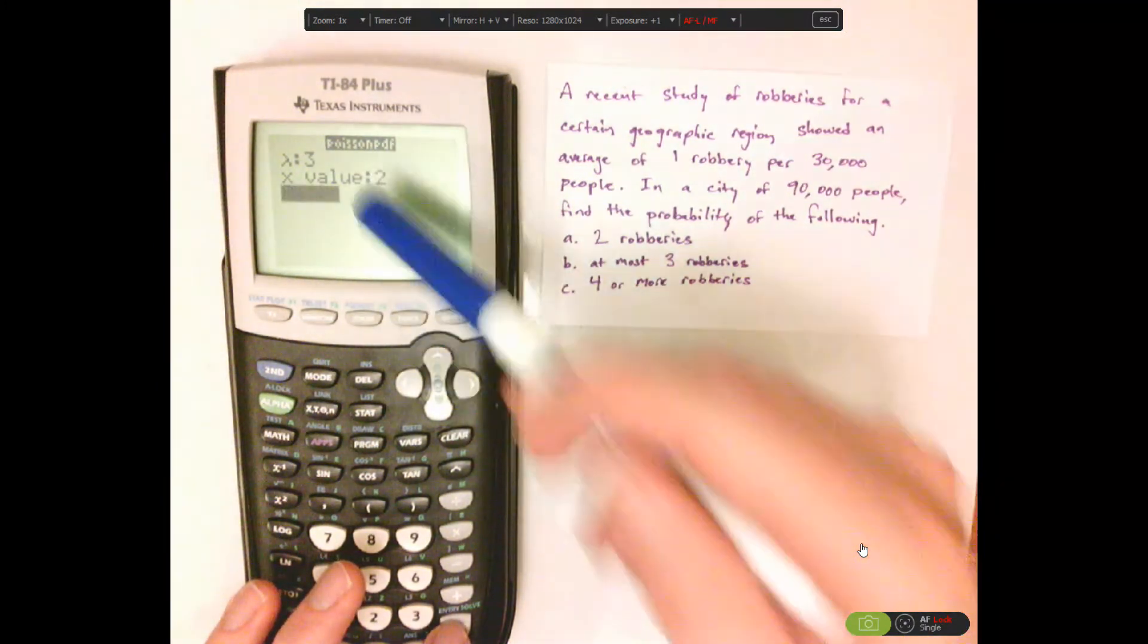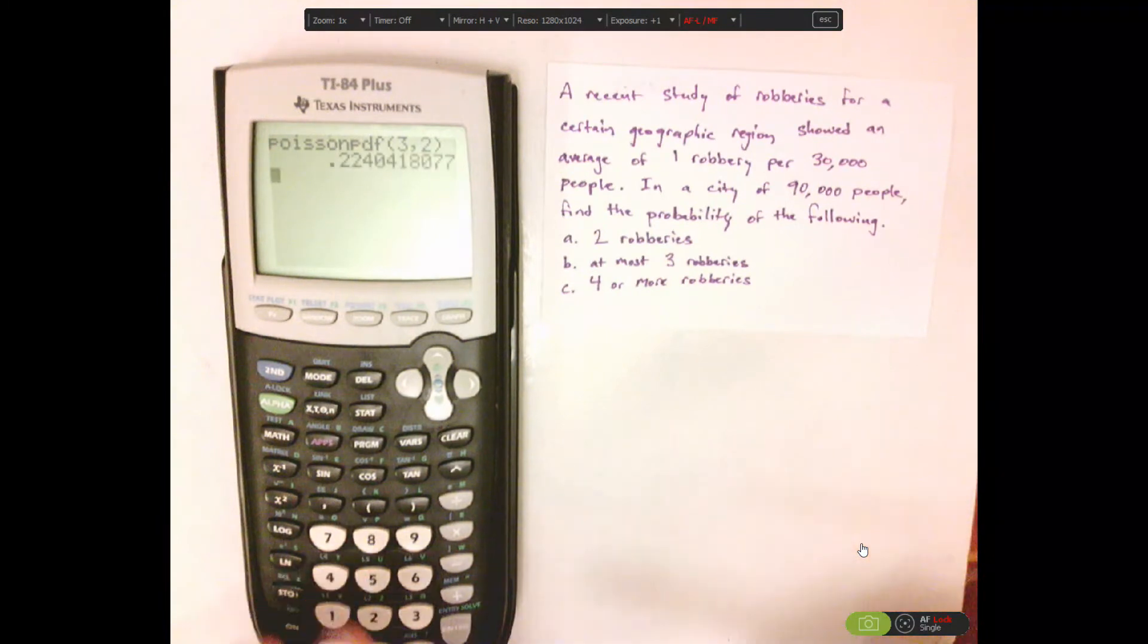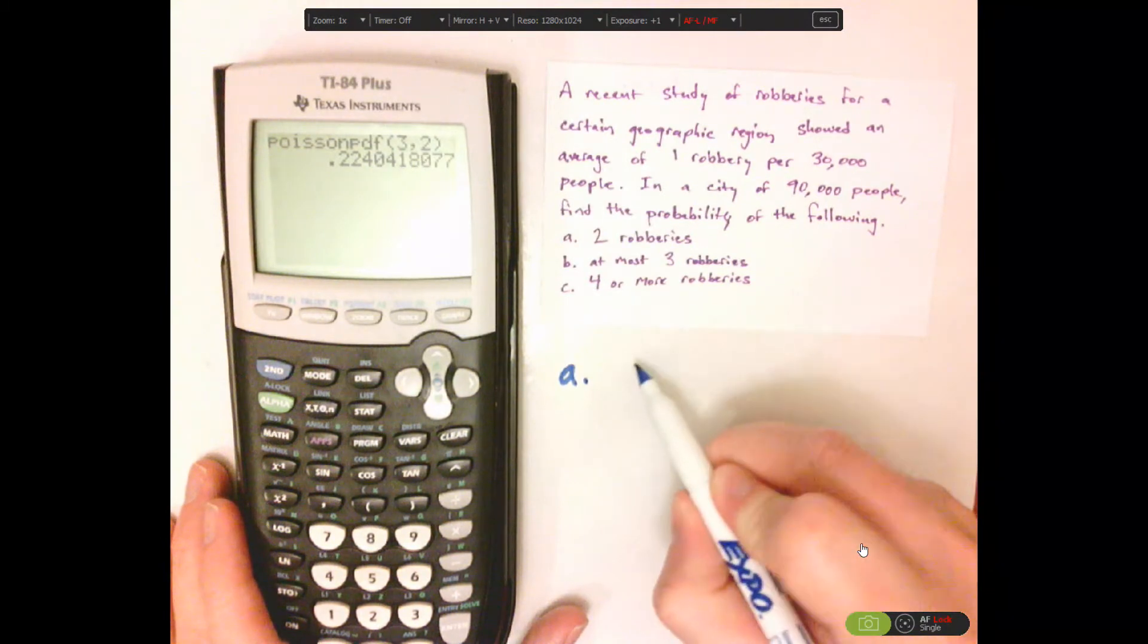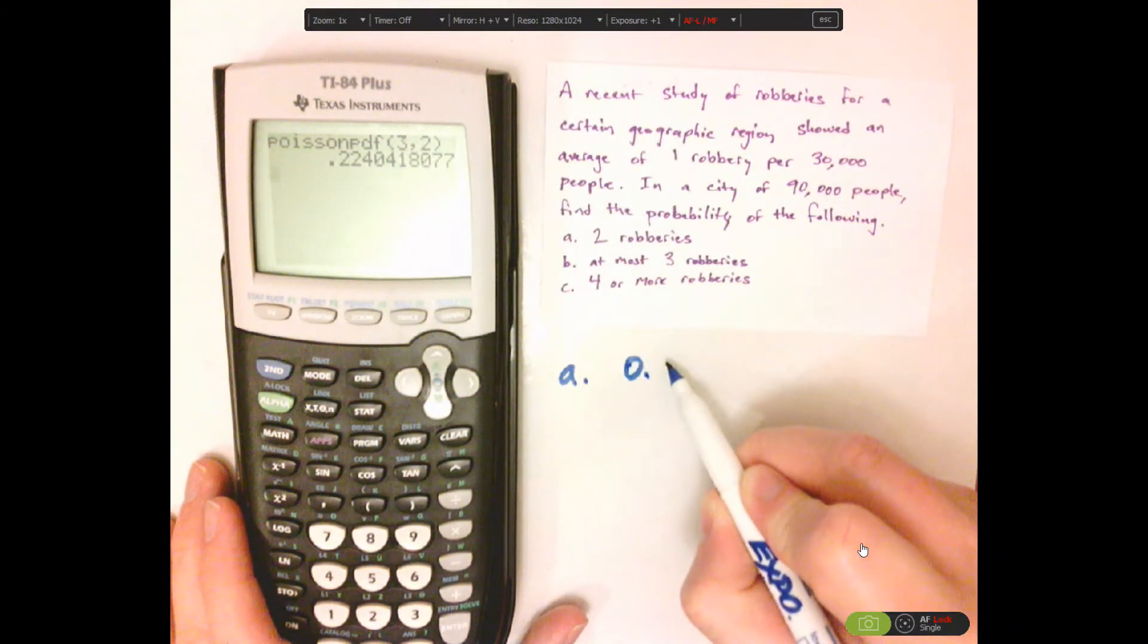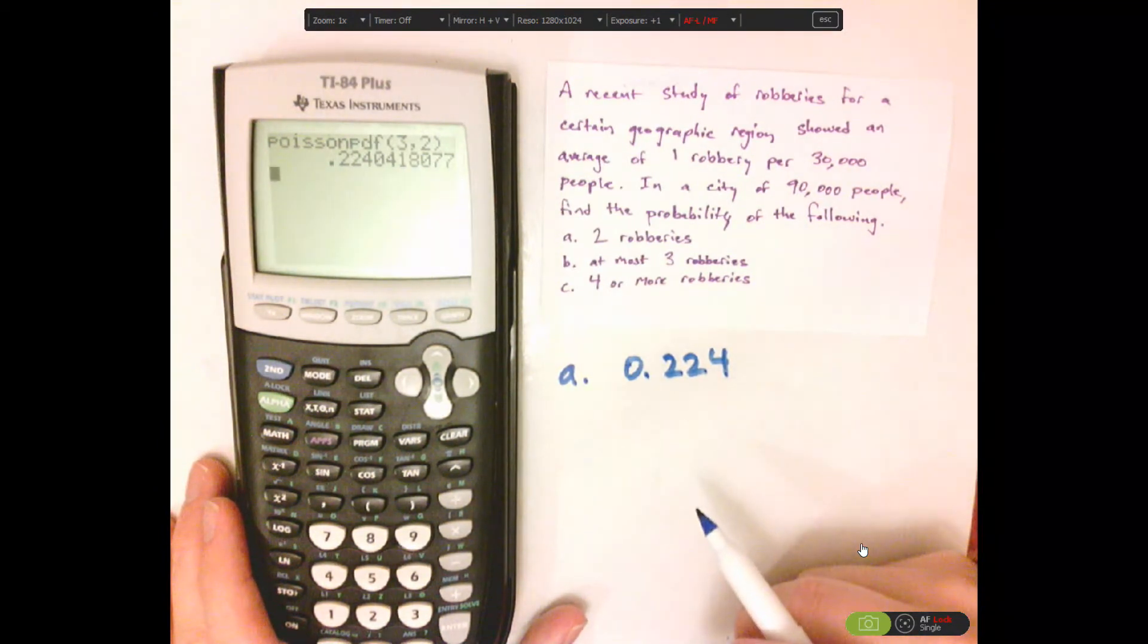So using the arrow keys to navigate, I'm going to push enter, push enter again. So the answer to that first one is a probability of 0.224, or just do three decimal places.